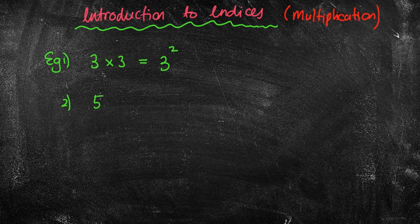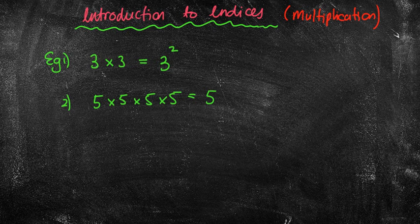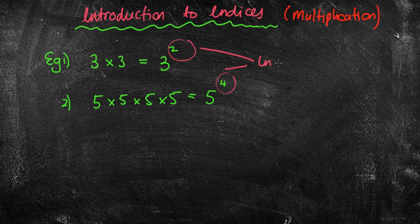If I had 5 times 5 times 5 times 5, we might say in index form, we have 4 of them being multiplied together, so it would be 5 to the power of 4. I'll get you to write those two examples down. And I want you to circle the two indices, and we're going to write the word index, or indices, or powers.